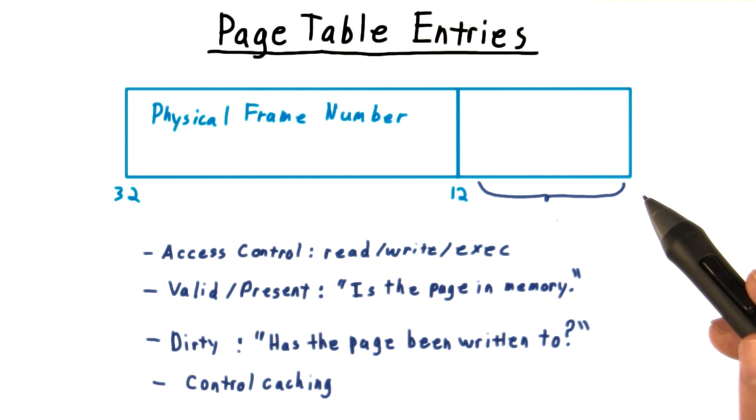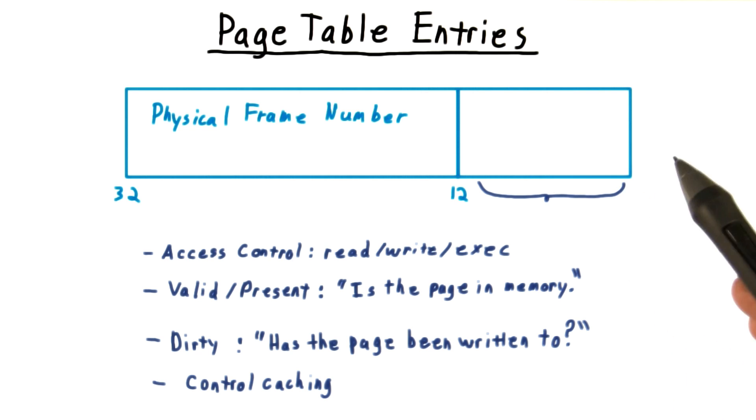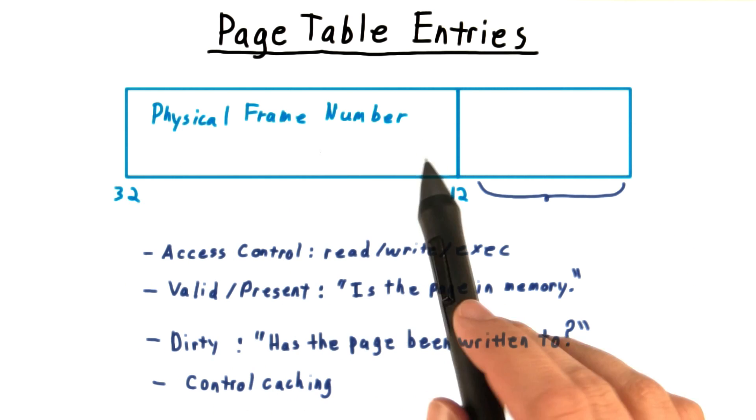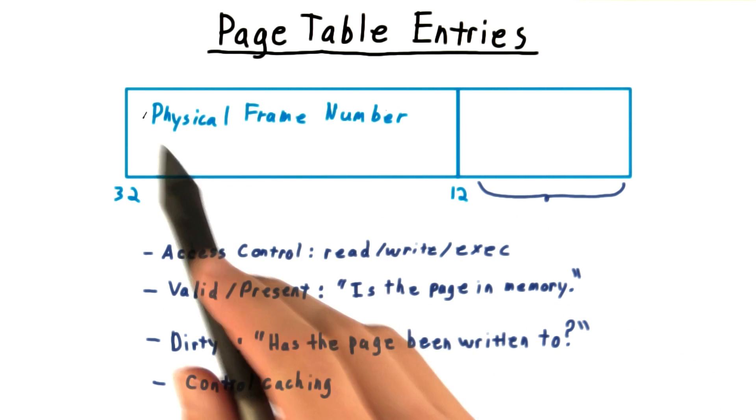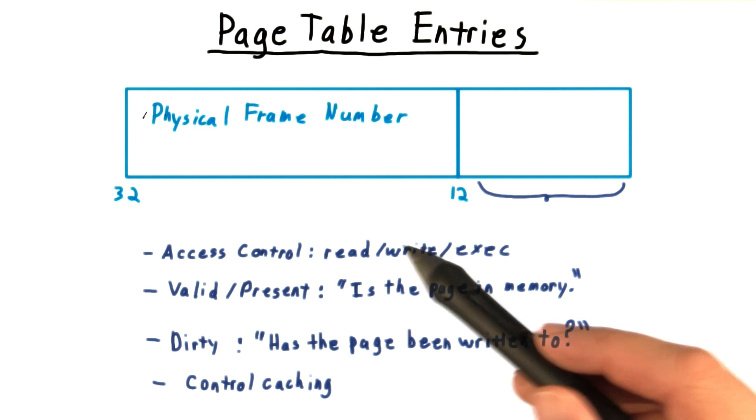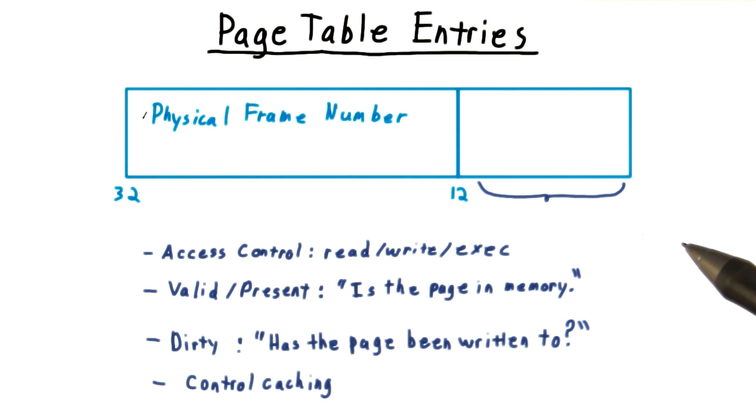Page table entries corresponding to virtual addresses that were never mapped to a physical address by the OS usually have physical frame numbers of zero. A physical frame number of zero is rather like a null pointer. Everybody knows that's an invalid physical frame number, and a segmentation fault will be generated.